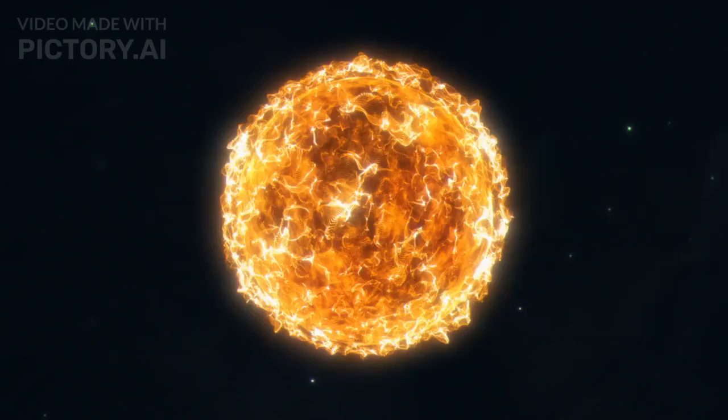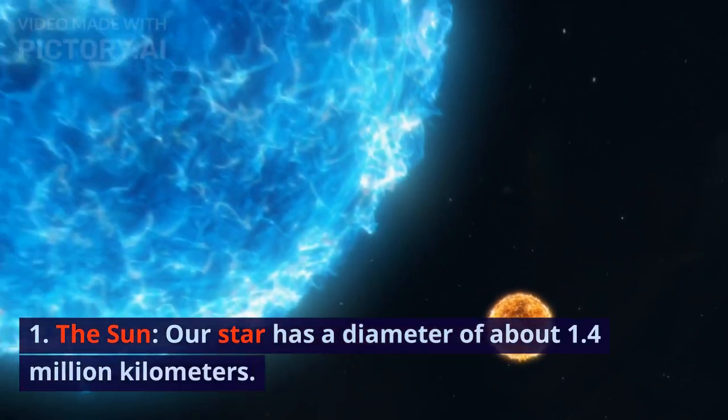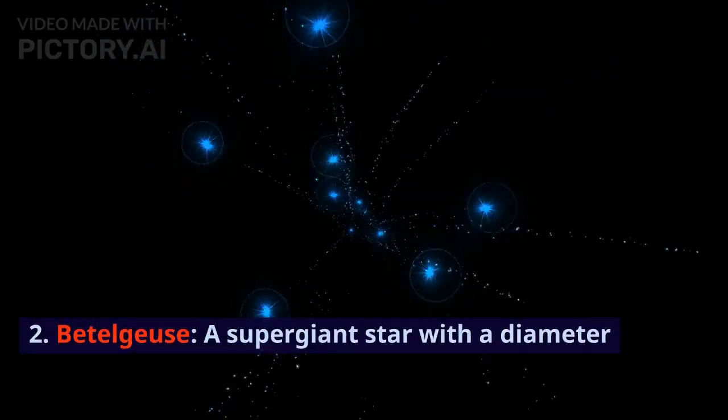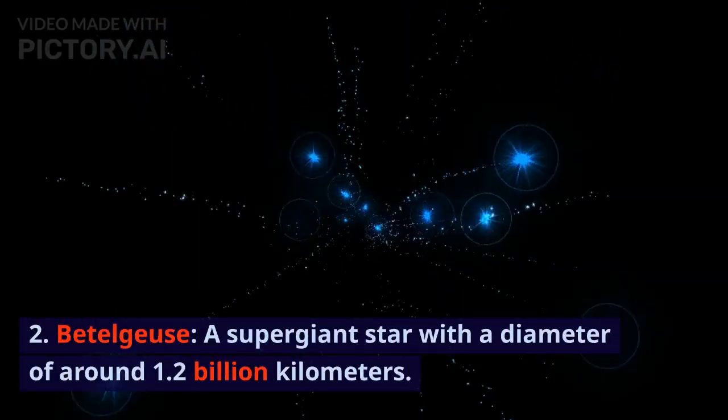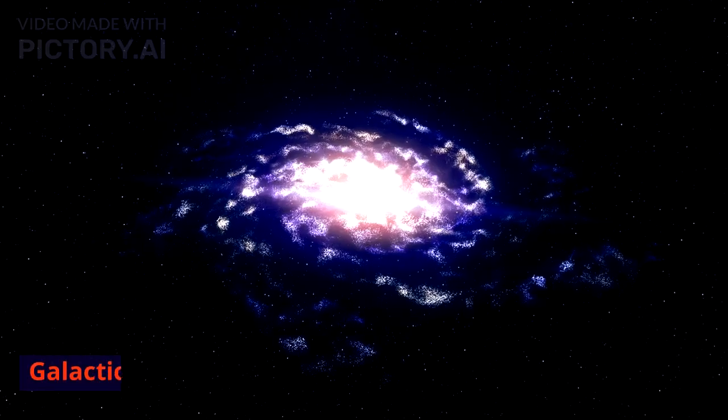Stellar Scales: 1. The Sun - our star has a diameter of about 1.4 million kilometers. 2. Betelgeuse - a supergiant star with a diameter of around 1.2 billion kilometers.